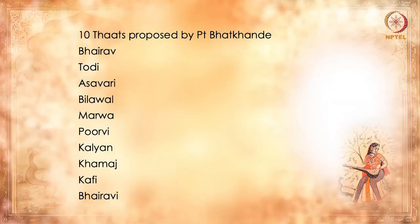He also said that if somebody wants to have more Thats, that is also fine. It is utterly intriguing that when you set out to offer a classification theory and know what is possible mathematically, you just step back and say 10 are enough. The 10 Thats he proposed were: Bhairav, Todi, Asavari, Bilaval, Marwa, Purvi, Kalyan, Khamaaj, Kafi, and Bhairavi. He also factored in the Samai Pranali — the raga-time association — to ensure there are enough Thats for every Prahar, or every part of the day or night.